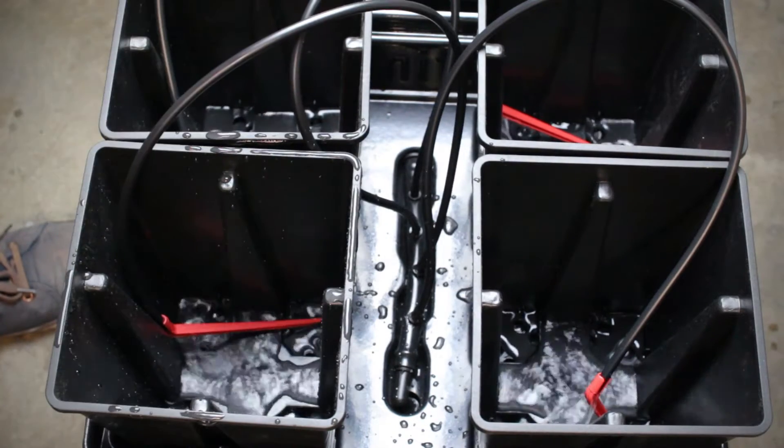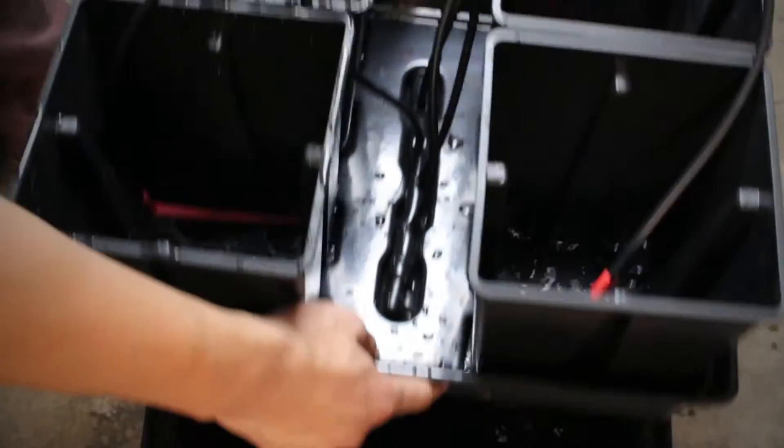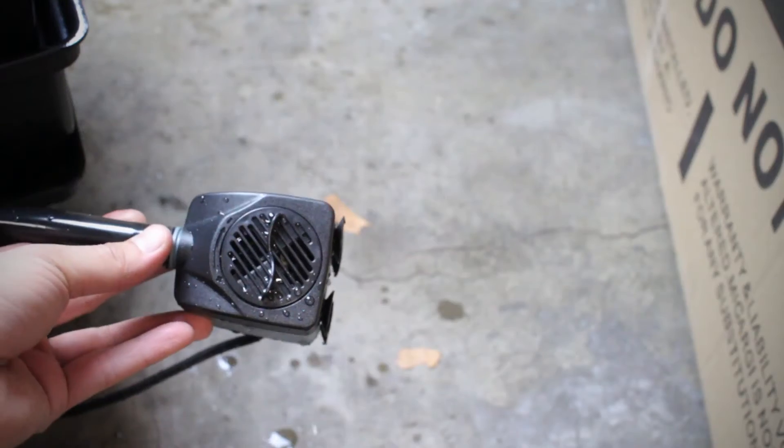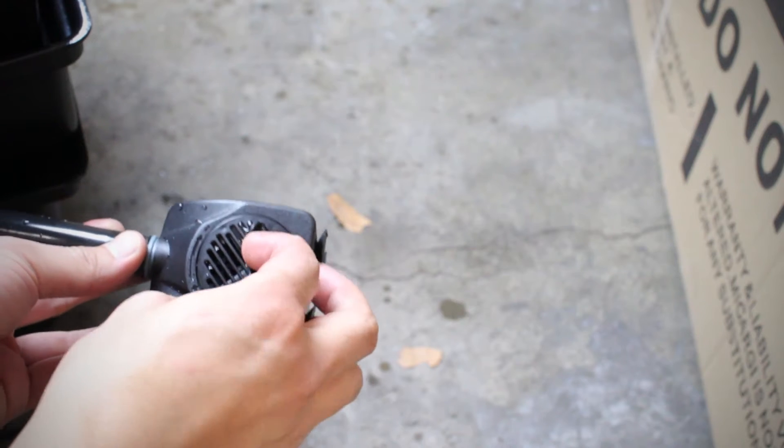After you get your system running, it should look like this. Your motor should be sitting inside the water. The power of the pump can be adjusted by turning this dial.